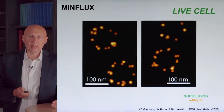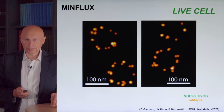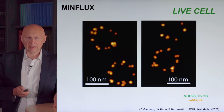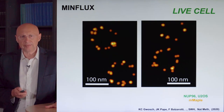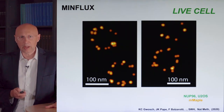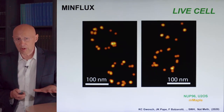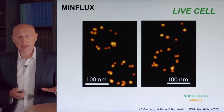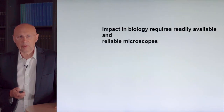MinFlux can also be applied to live cells, with some limitations. This requires a switchable or activatable fluorophore — in this case, an activatable fluorescent protein called mMaple. The recording must also be quick, which is why the field of view is small. In a living cell, substantial movement can occur, blurring out positions and the resulting image, since it always takes time to localize the molecule.